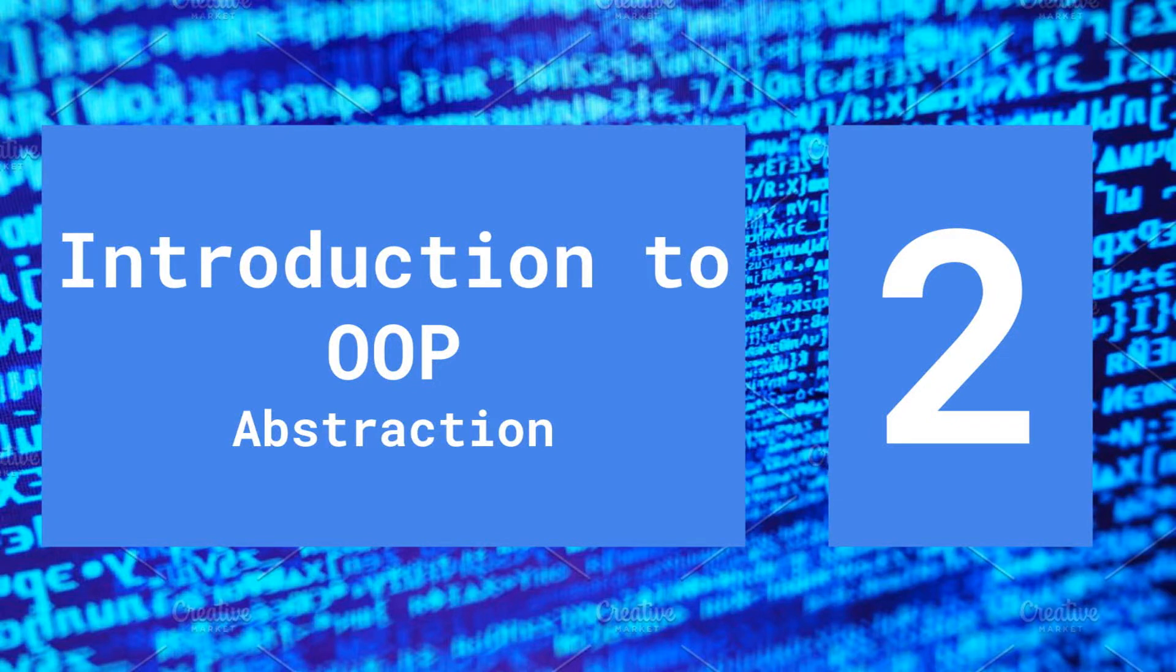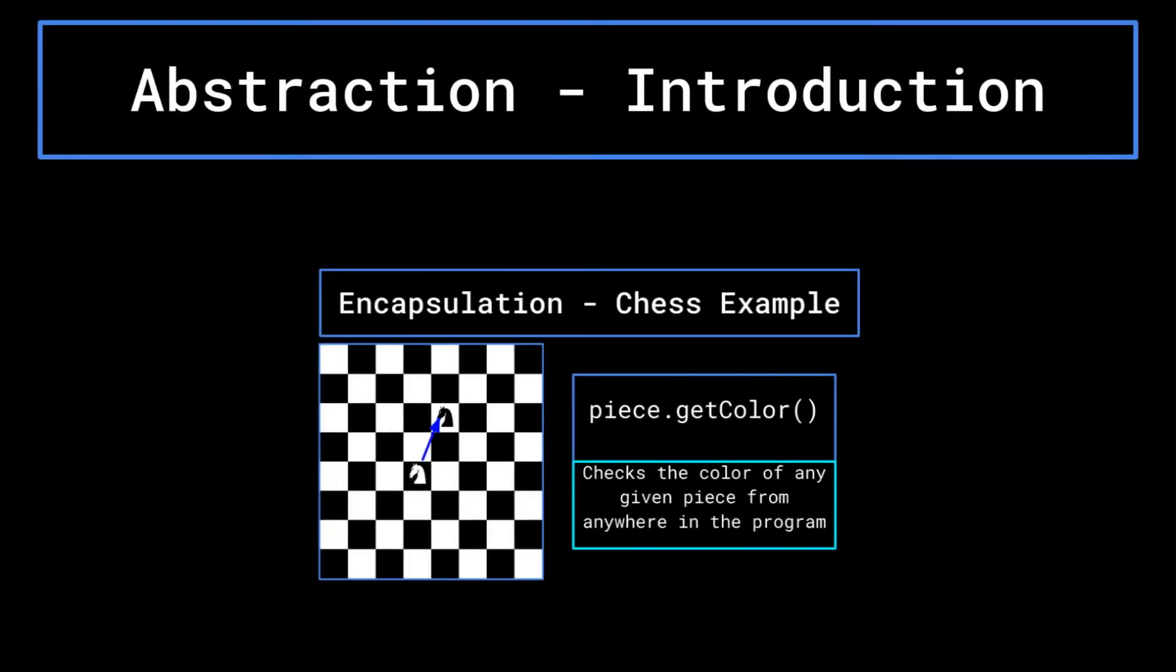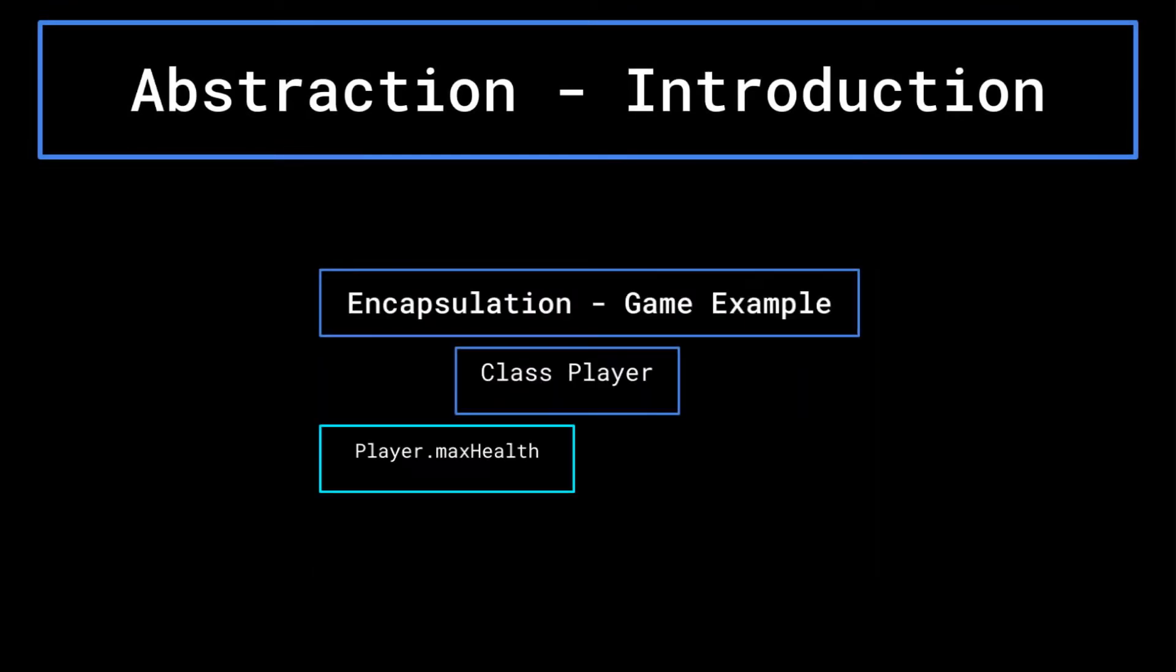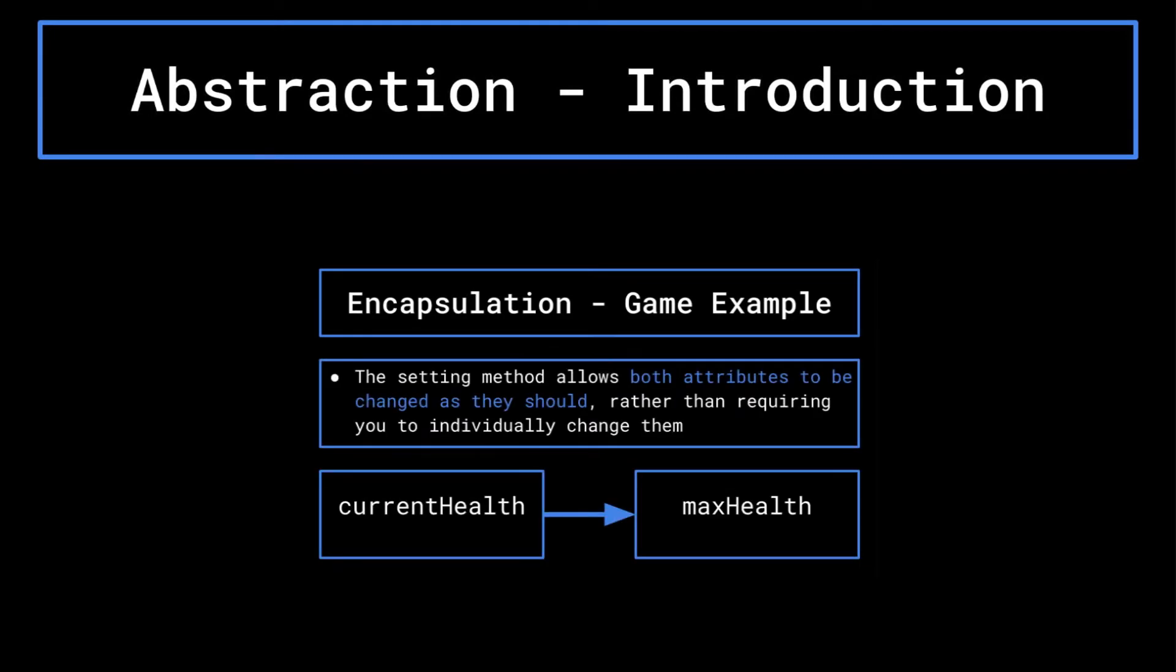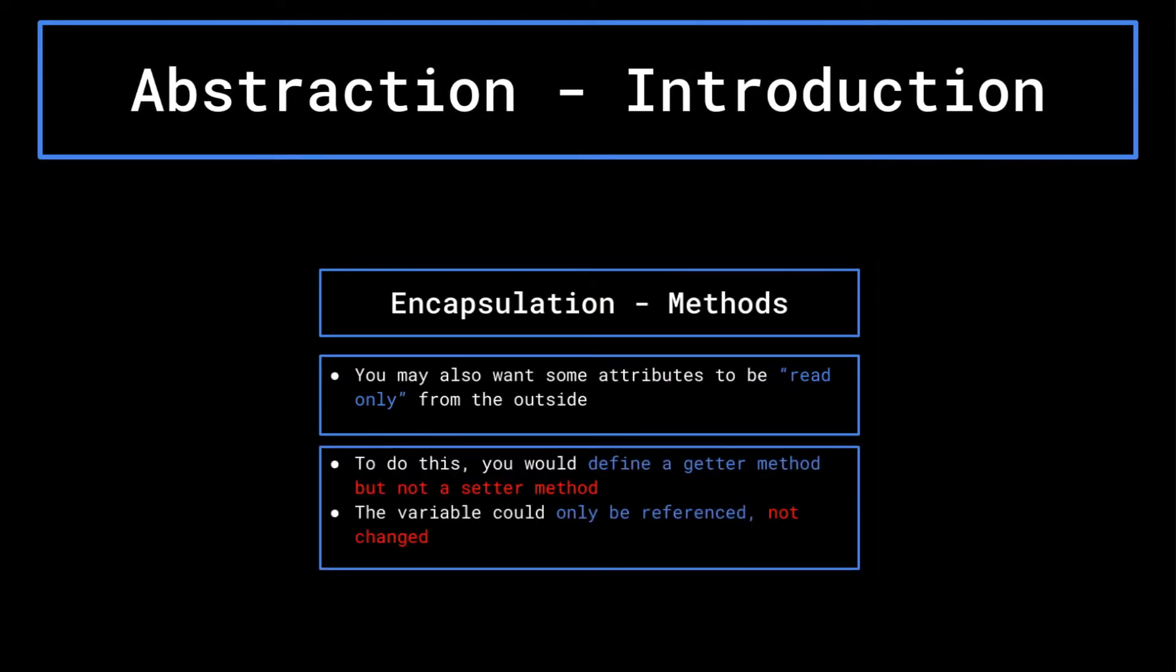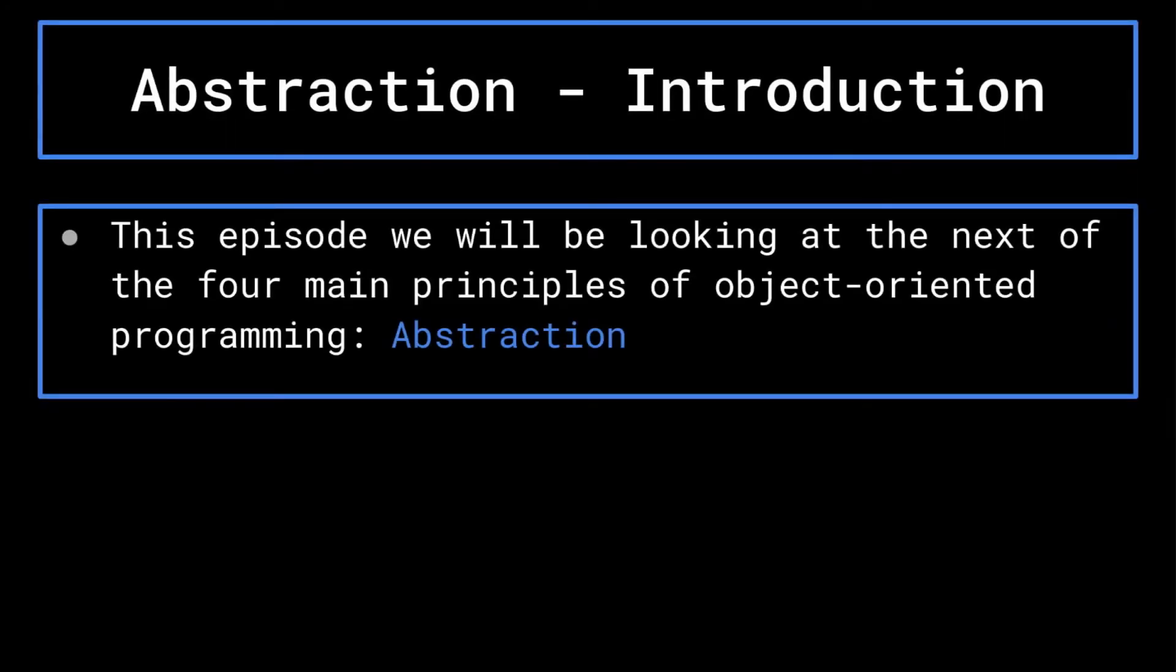Hello everyone, and welcome back to our introduction to object oriented programming. Last episode, we went over the first of the four main principles, encapsulation. This video greatly builds upon the ideas that were introduced last episode, so be sure to check it out before watching this episode. A link to the playlist containing every episode in the series so far will be in the description. In today's episode, we are going to be discussing the next of the four main principles of object oriented programming, that being abstraction.